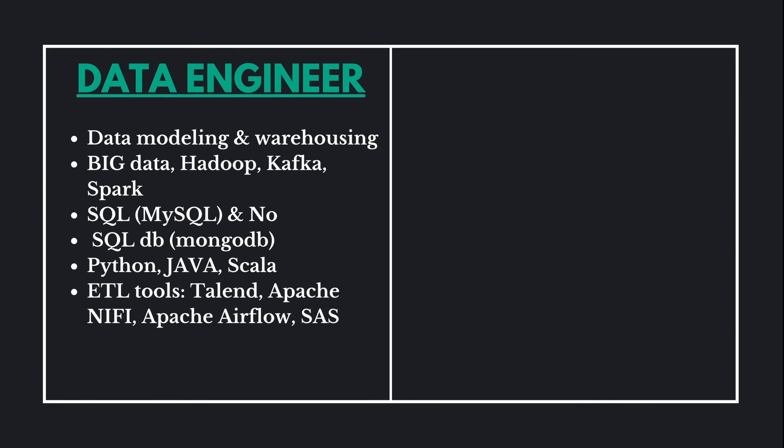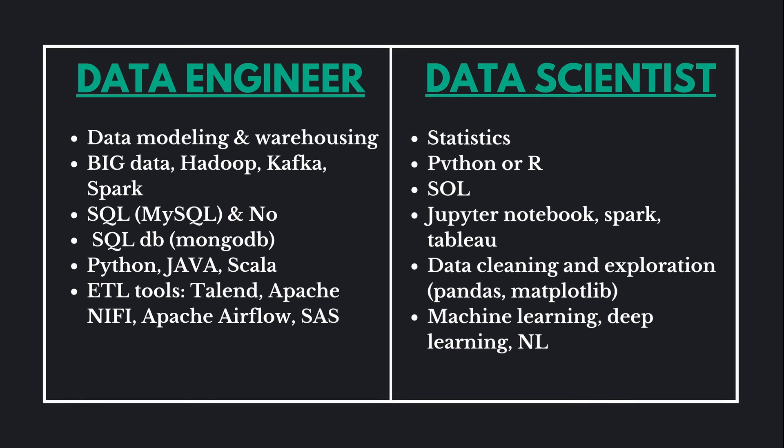As a quick comparison: data engineers work around data modeling and warehousing, big data tools like Hadoop, Kafka, and Spark, SQL and NoSQL databases, ETL tools and pipelines like Airflow, and sometimes CI/CD deployments. Their key language is Python or Java. Data scientists deal with statistics and probability to solve prediction and regression problems. They work with Python, R, and SQL, use Jupyter notebooks and Tableau for visualization, and do a lot of data cleaning and exploration before building machine learning models.